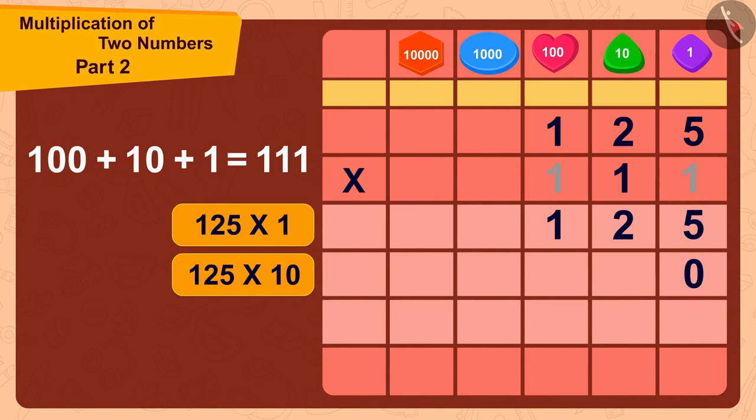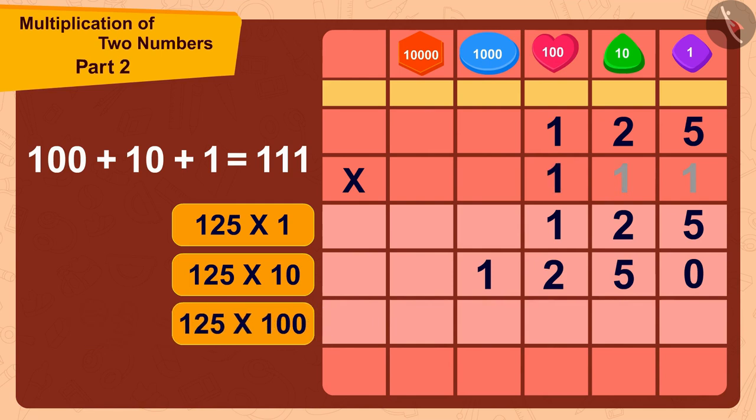Now we just have to multiply 125 with 100. Because there are two zeros in 100, we will first write two zeros, and now we just have to multiply 125 with 1.